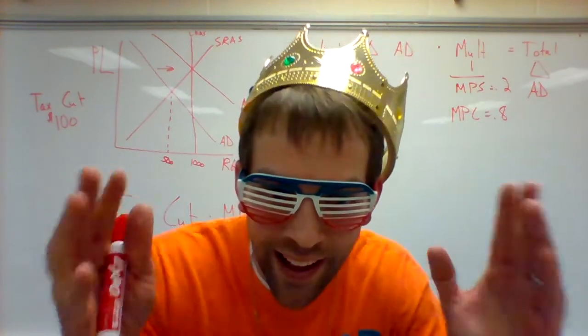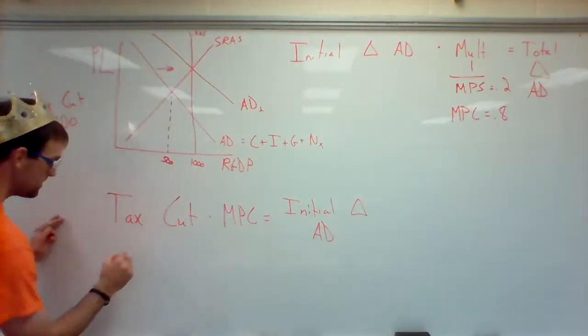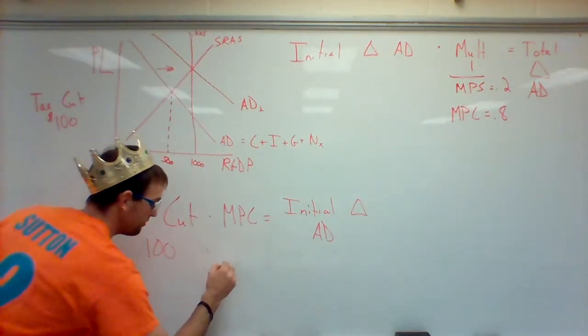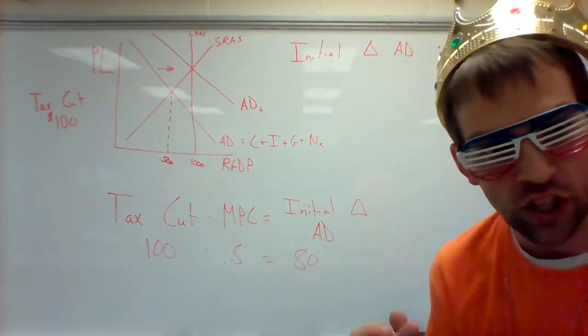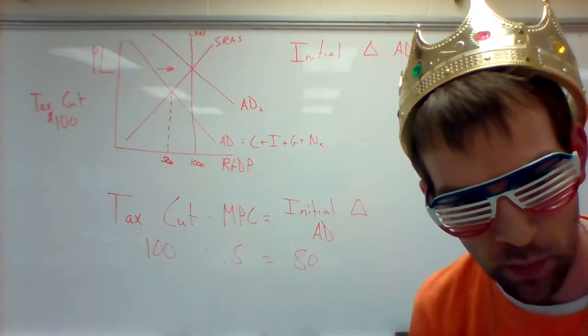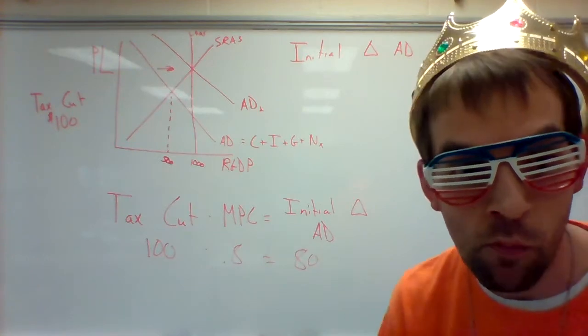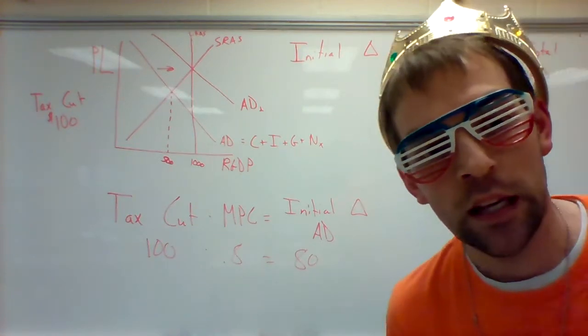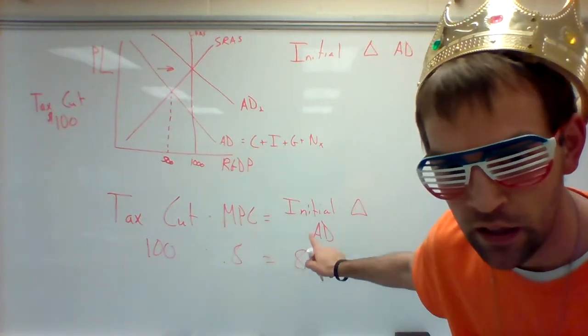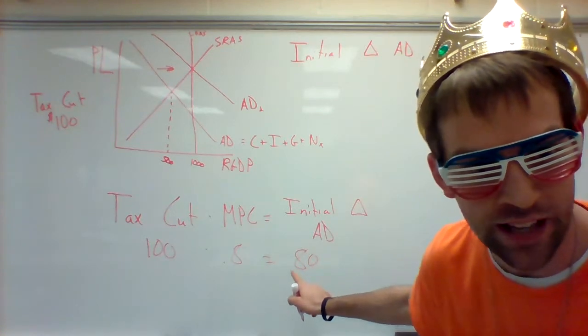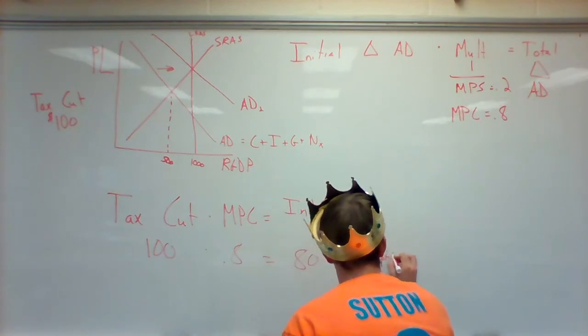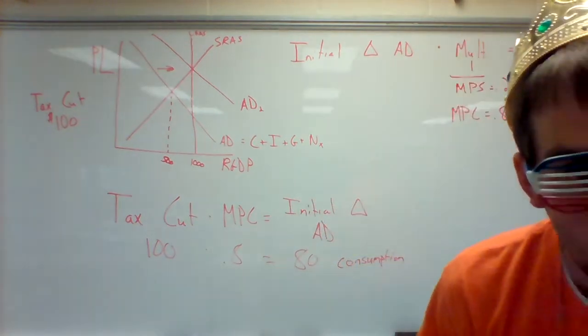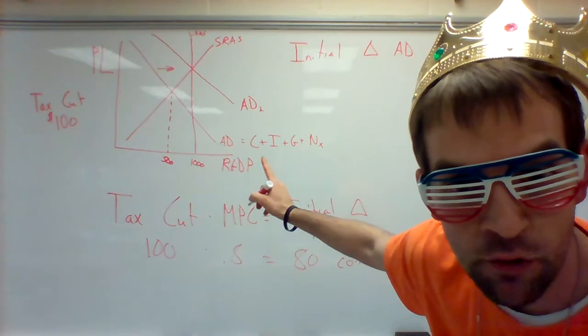Some of you may instinctively go 80. The question is, how did you do that? Well, here's how you did it. Right there it is. You took the tax cut and you multiplied by the marginal propensity to consume. It tells you how much they will spend initially. Notice this initial change is a change in consumption, which is the C right here.